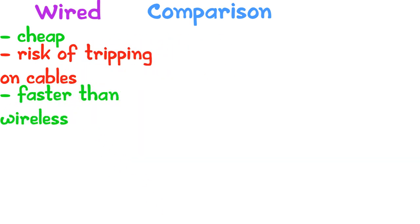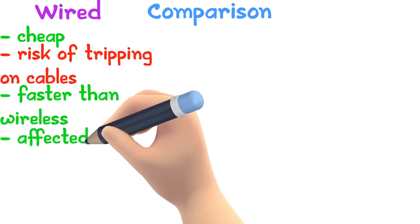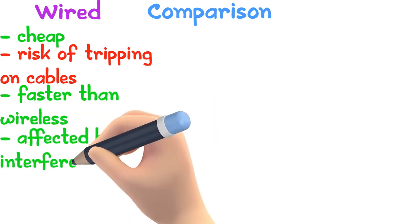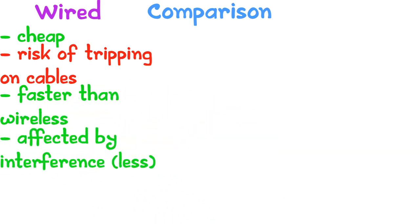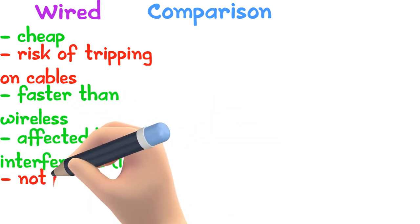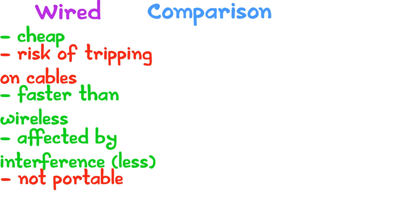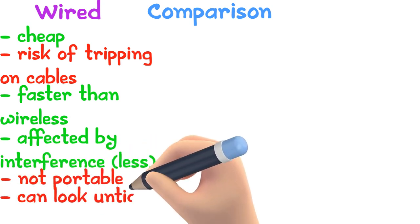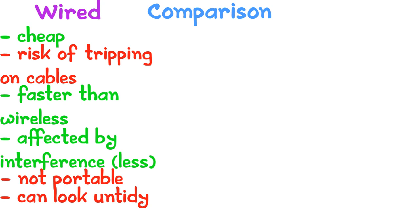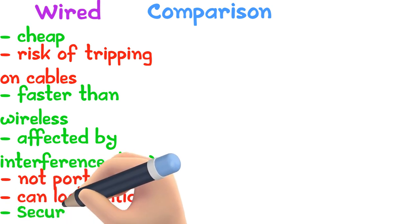Wired communication is affected by interference, but very little. It is not portable as it can't go past 100 meters. It can look untidy if not kept properly. And it is secure.